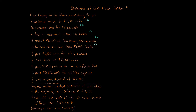F — paid $5,100 cash for salary expense — that's going to be operating activity. If we're given expenses or income, that's going to be operating because it goes into net income or net loss. G — sold land for $10,200 cash — that's going to be an investing activity because we are selling property, plant, and equipment. H — paid $4,100 cash on the loan from Radish Bank — that's going to be a financing activity. I — paid $5,300 cash for utilities expense — that's operating activities because it goes to net income. J — paid a cash dividend of $2,100 — this is going to be a financing activity.